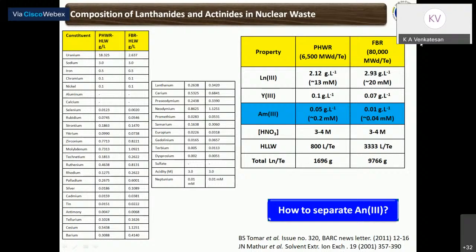High-level liquid waste is no longer regarded simply as waste, because of the presence of platinum group metals and heat-generating nuclides such as cesium and strontium. After the separation of minor actinides, platinum group metals, and heat-generating nuclides, the remaining elements can be very easily disposed as waste in a shallow land barrier and do not require deep geological repositories. Looking at the composition of high-level liquid waste, the PHWR fuel reaching a burn-up of 6500 MWd/t has a lanthanide content of 1.7 kg, whereas the FBR has a lanthanide content of around 10 kg.